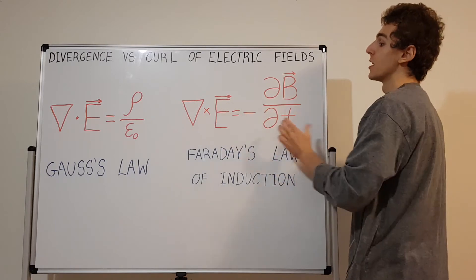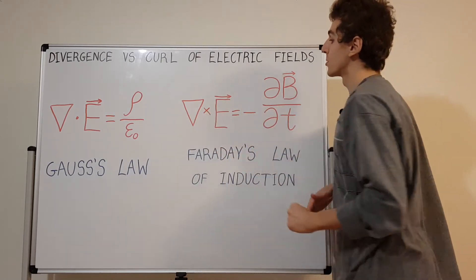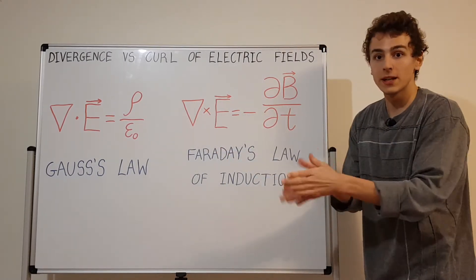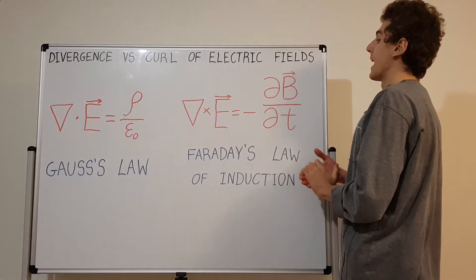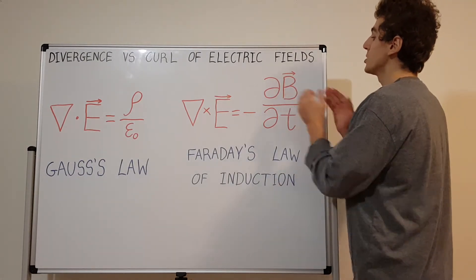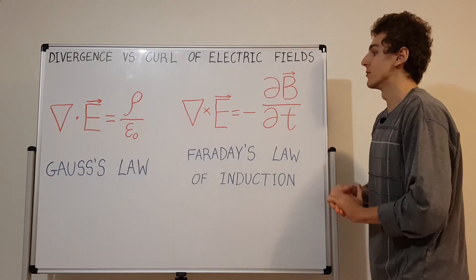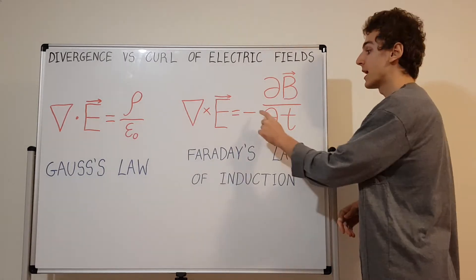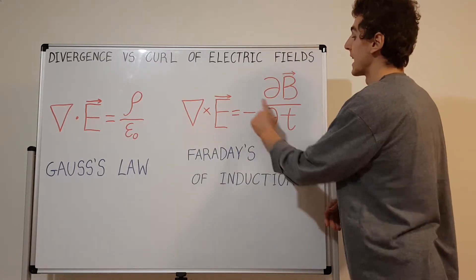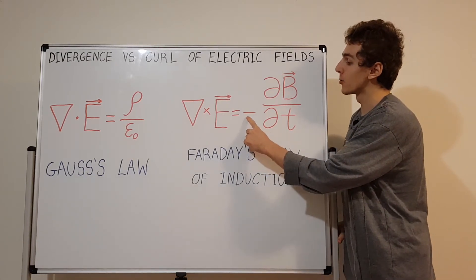Both of these sides are actually vectors because taking the cross product is always going to give you a vector that's perpendicular to the two input vectors. Differentiating a vector quantity gives you a vector as well. You have to flip the direction because of this negative sign, which is usually called Lenz's law.